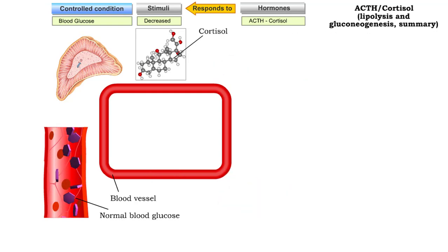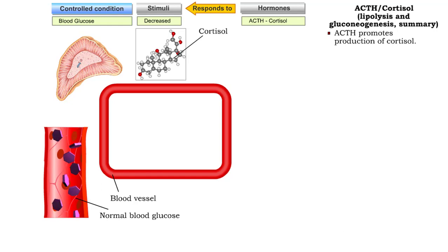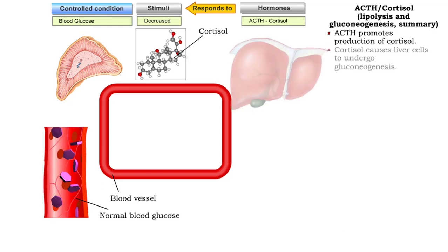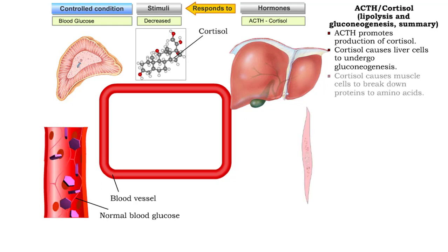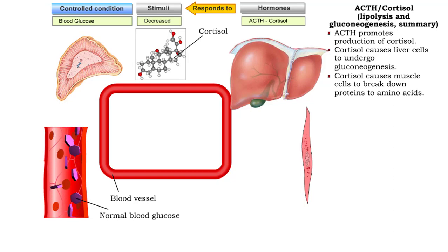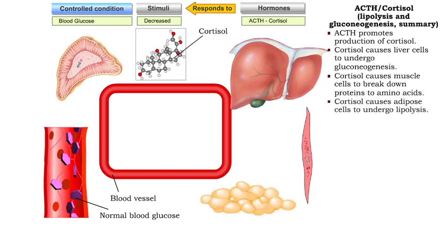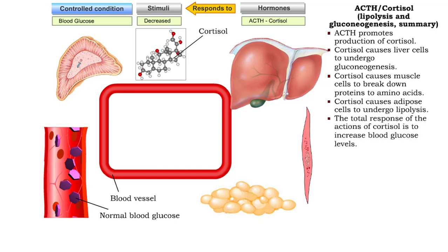In summary: ACTH promotes production of cortisol. Cortisol causes liver cells to undergo gluconeogenesis. Cortisol causes muscle cells to break down proteins to amino acids. Cortisol causes adipose cells to undergo lipolysis. The total response of the actions of cortisol is to increase blood glucose levels.